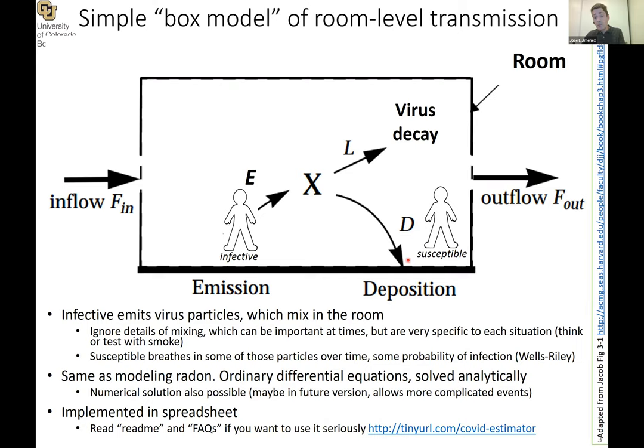We have a susceptible person and we apply the Wells-Riley model of infection, which tells us what the probability of that person being infected is. It's a model that was developed for measles and tuberculosis and also works for COVID-19.